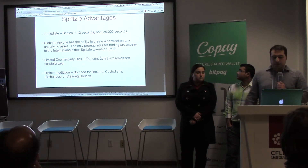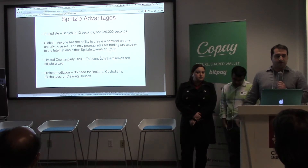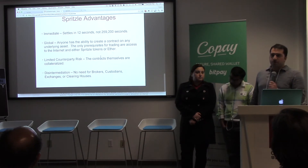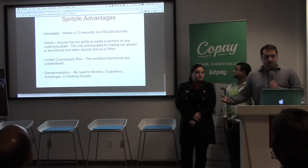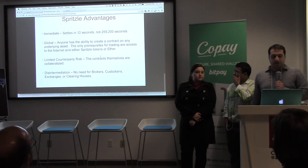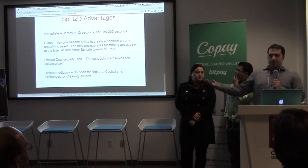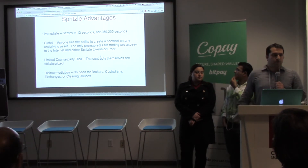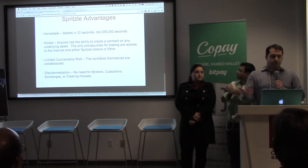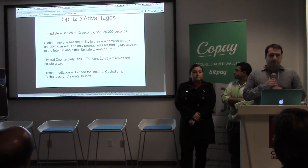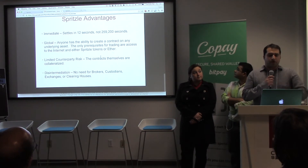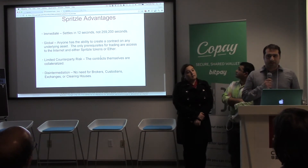Our settlement time is much faster on Ethereum. The block time on Ethereum is 12 seconds. Typically it takes three days to settle a transaction, but here you can settle instantaneously within one block, as we showed you earlier. We showed you a contract where the whole life of the contract was only 60 seconds.